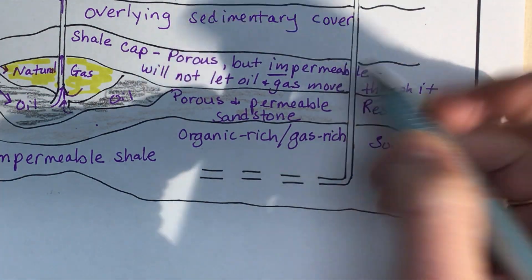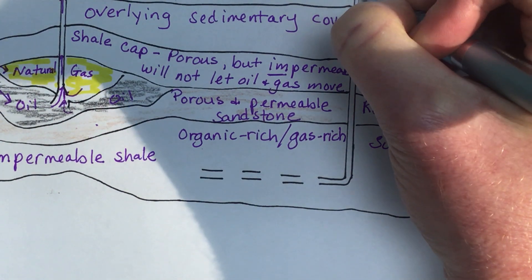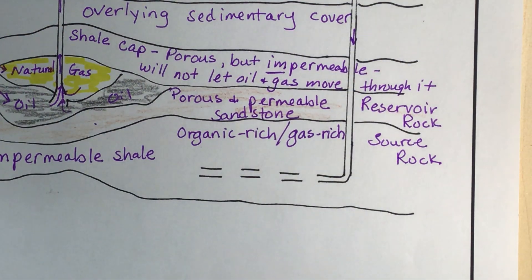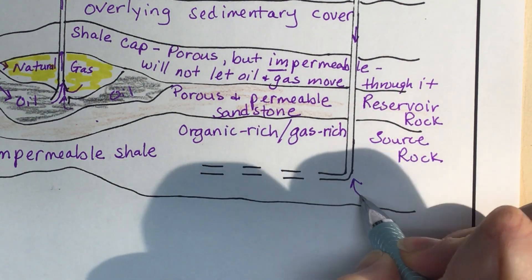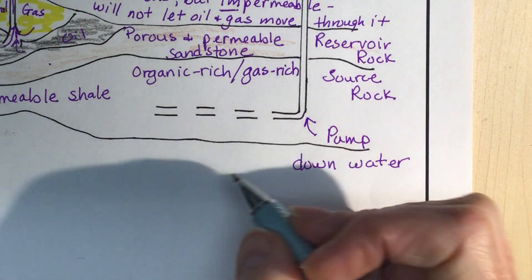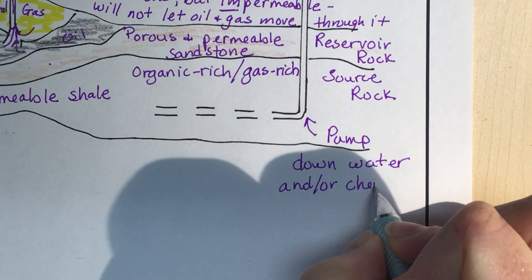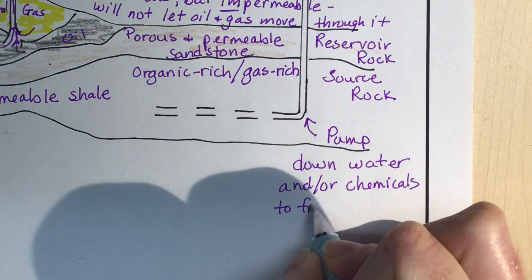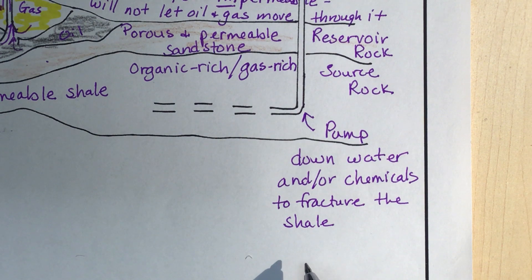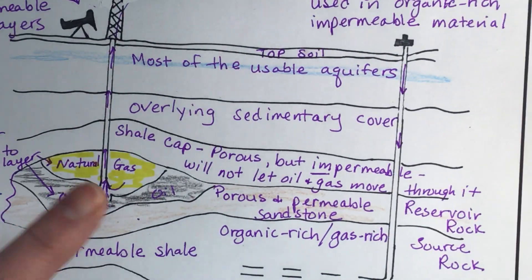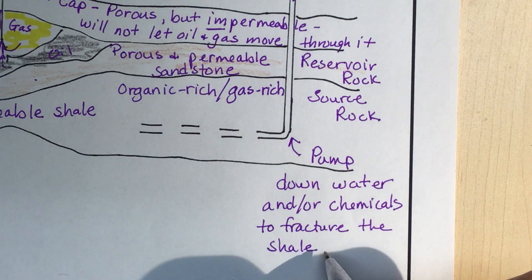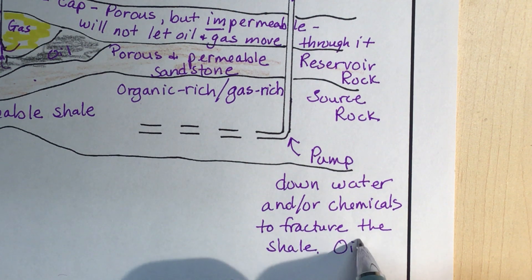What happens in fracking is that they send fluid down — they pump down water and/or chemicals to fracture the shale. In oil extraction this is called secondary extraction of oil, as opposed to primary extraction, which is the regular drilling method. The water or chemicals fracture the shale and then oil and gas is released.